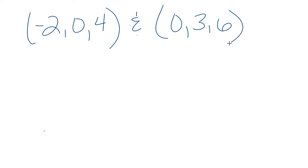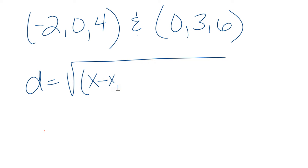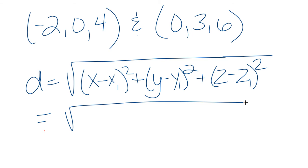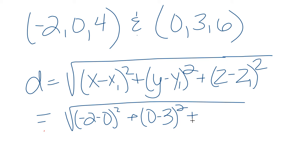If we don't remember, the two-dimensional distance formula was the square root of (x minus x₁)² plus (y minus y₁)². That came from the Pythagorean theorem. In three dimensions, we just add the next dimension: plus (z minus z₁)². So we get: negative two minus zero squared, plus zero minus three squared, plus four minus six squared.